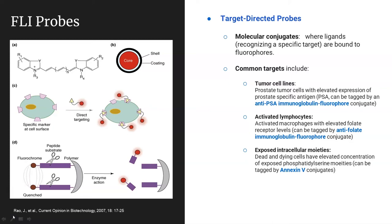In oncology models, you can acquire an anti-PSA immunoglobulin–fluorophore conjugate that will bind specifically to prostate tumor cells. To evaluate activated macrophages, you can use an anti-folate immunoglobulin–fluorophore that binds specifically to folate receptors, which are expressed at elevated levels in macrophages. And for apoptosis in dead and dying cells, you can use Annexin V, which binds specifically to the phosphatidylserine moieties exposed in dead and dying cells.